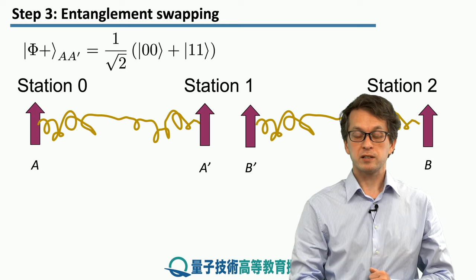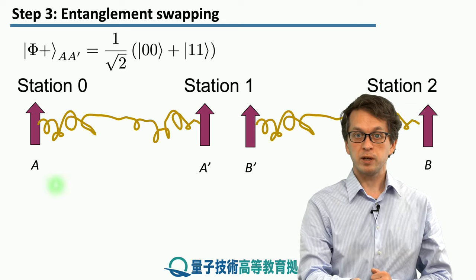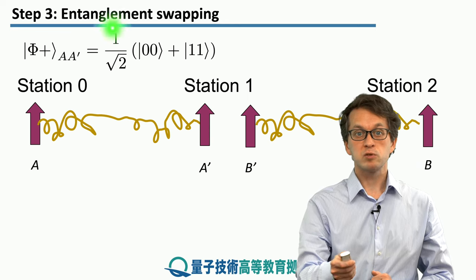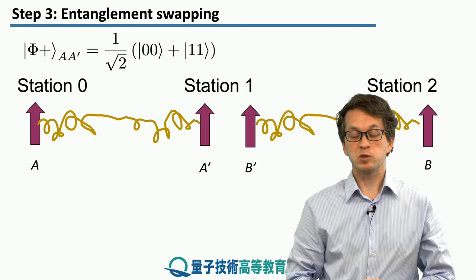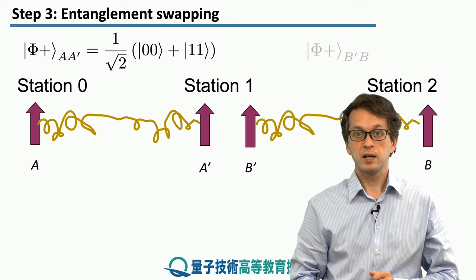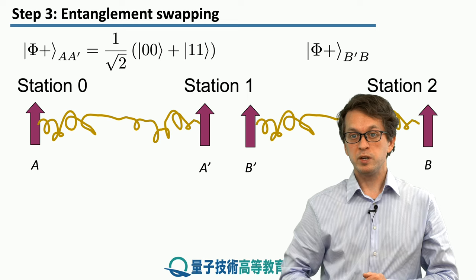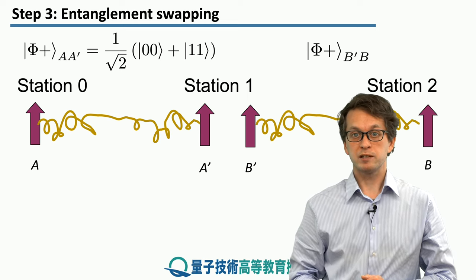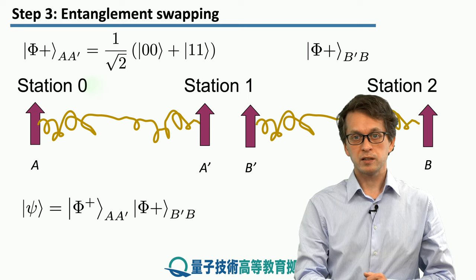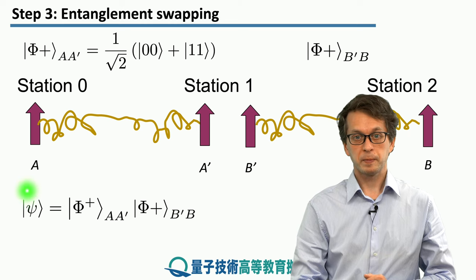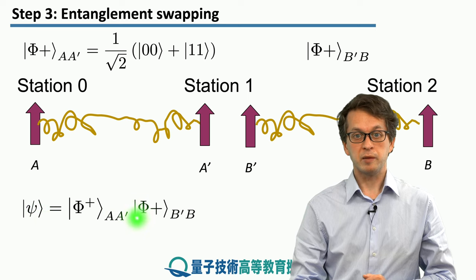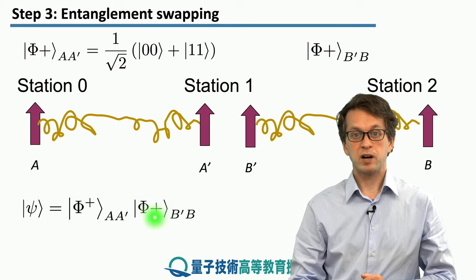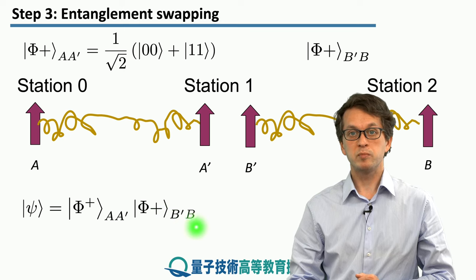Station 0 and station 1 are entangled via a Bell pair. For concreteness, let's assume it's the phi-plus state: a superposition of |00⟩ + |11⟩. Similarly, B' and B are entangled in the maximally entangled phi-plus state, again |00⟩ + |11⟩. So the total state of all four qubits is the tensor product of phi-plus between A and A', and phi-plus between B' and B.